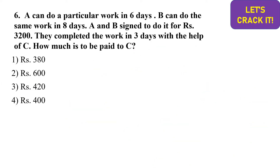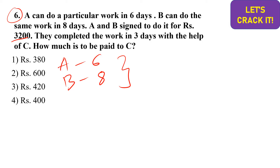The fifth question is also time and work but with payment involved. A can do a particular work in 6 days, and B can do the same work in 8 days. Both A and B contracted to do the work for 3200 rupees, but they completed it with the help of C within 3 days. We need to find the amount to be paid to C.